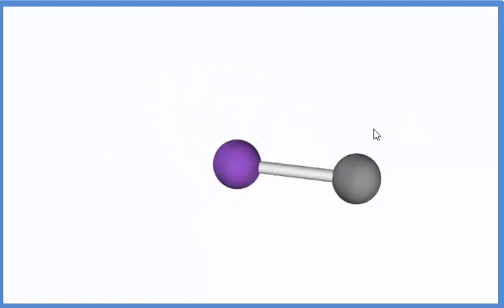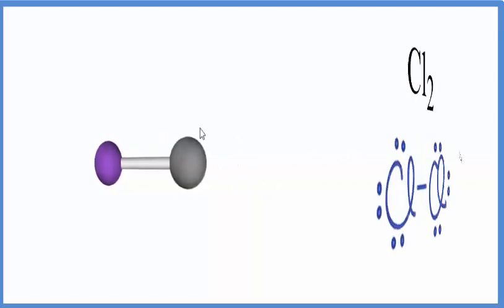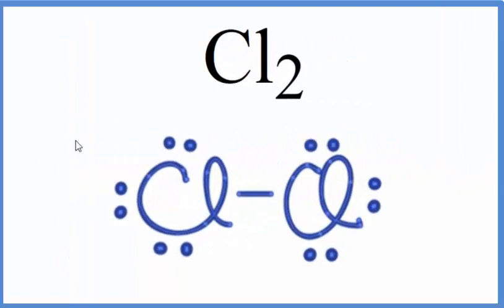No matter how you orient this, you could draw a straight line through it. That's what makes this a linear molecule. Back to our Lewis structure, we note that this is linear and has a bond angle of 180 degrees.